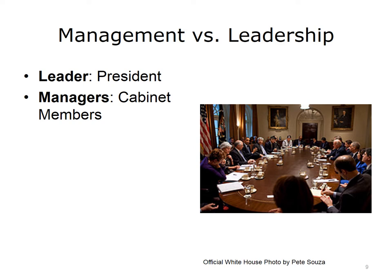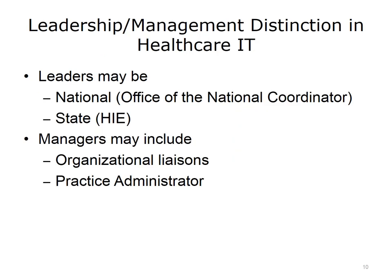We can also look at the example of the President of the United States and the Cabinet members. The President is perceived as a vision-setter and is considered a leader, but relies on the Cabinet members, or managers, to manage the individual pieces of the leadership strategy. With the creation of the National Coordinator for Health IT position in 2004, the U.S. now has a federal entity to coordinate nationwide efforts for health information technology. The Office of the National Coordinator, or ONC, is the principal leadership entity surrounding adoption of electronic health records. But vision alone is not enough — someone has to do the work, and that's where managers in state and local organizations come into play. They must take the vision and make it a reality.